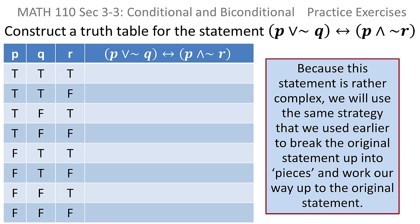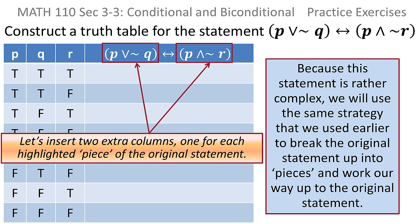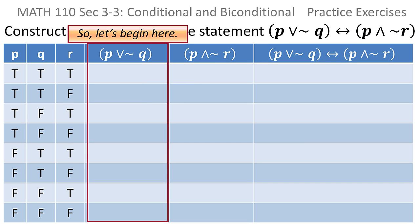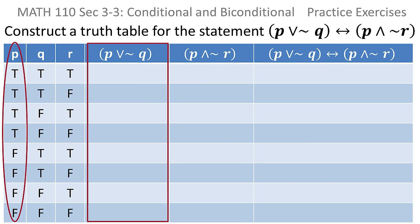When I have a complex logical statement, I tend to break it up into pieces. So I will break this one up into two pieces. One piece is an OR and the other piece is an AND. I'll create columns for each of those pieces and then put it back together at the end.